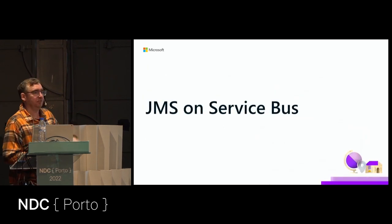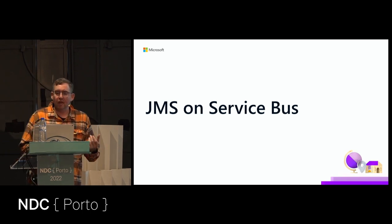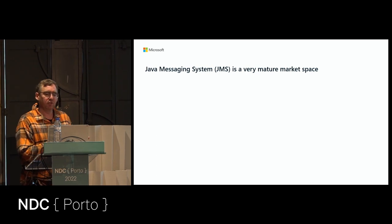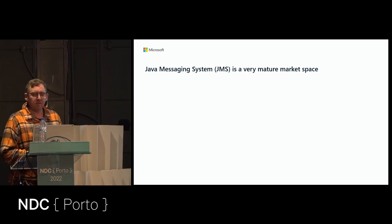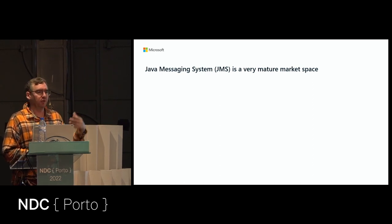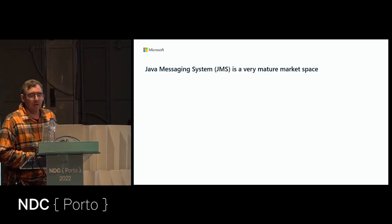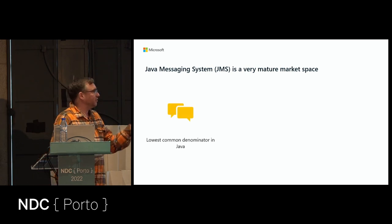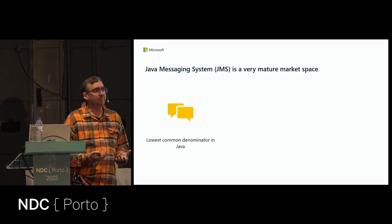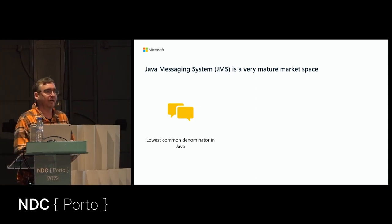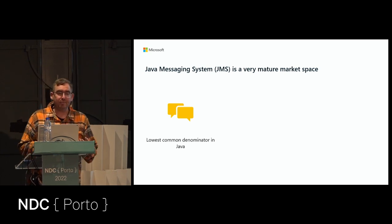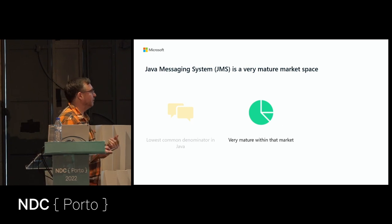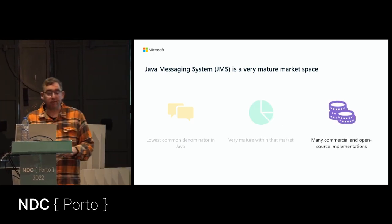JMS — Java Message Service — is really the protocol in the Java market. It's very mature: JMS 1.0 was released in 1998, 2.0 in 2013, and JMS 3.0 was just released this year. We support JMS 1.1 and 2.0, and we're going to look into 3.0 support as well. It's the lowest common denominator — every Java application supports JMS, and all the different MQ products like ActiveMQ, IBM MQ, Artemis, and WebSphere all support it, so we thought it was important that we should too.